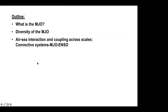So again: what is MJO? How diverse is it? How can we actually identify individual MJO events on weather maps? What is the role of air-sea interaction and coupling across scales? How do individual convective systems interact with MJO as a large-scale dynamic system? And how does MJO upscale to interact with larger phenomena? That's the subject for the next 20 to 25 minutes.